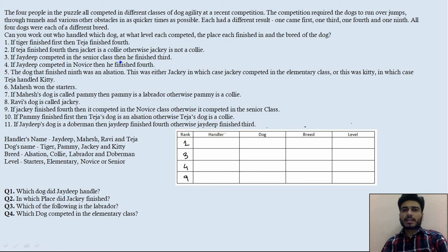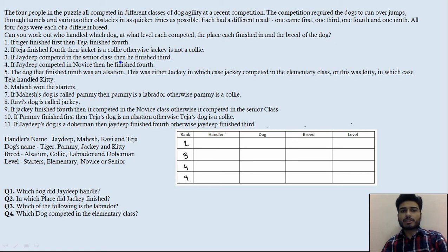If Tiger finished first then Teja finished fourth — this is a variable condition, so we'll hold it for later. The next condition: if Teja finished fourth then Jackie is a Collie, otherwise Jackie is not a Collie — also variable, we'll use it later. If Jadeep competed in the senior class then he finished third, and if Jadeep competed in novice then he finished fourth — both are variable conditions we cannot use right now.